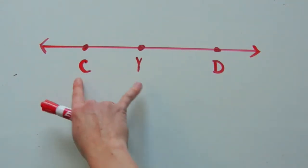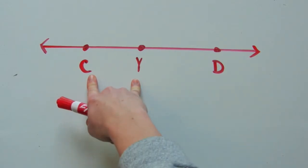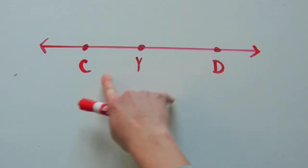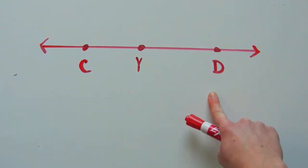and that the measurement between C and Y plus the measurement between Y and D equals the entire measurement C to D. So let me go ahead and write that out for you.